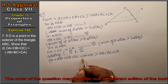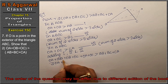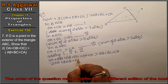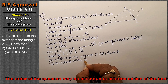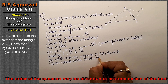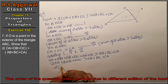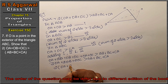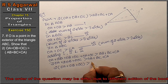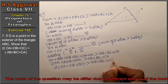OA appears two times, OB appears two times, and OC appears two times. Taking 2 as common: 2 times OA plus OB plus OC is greater than AB plus BC plus CA. Hence proved.